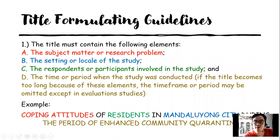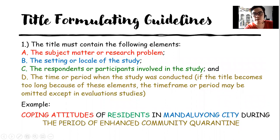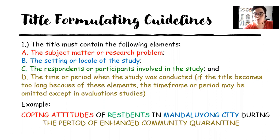Based on the first guideline, the title should contain the following elements: first, the subject matter or the research problem; second, the setting or the locale of the study; third, the respondents or participants involved in the study; and last but not the least, the time or period when the study was conducted.